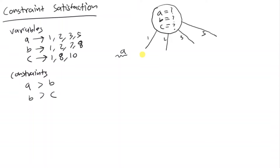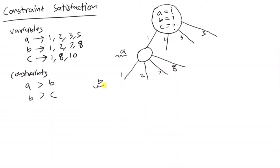Let's go with picking 1 for a. Once we've picked a value for a, we pick a value for b from 1, 2, 7, and 8. If we pick 1 for b, we check our constraint: a is not greater than b since both are 1, so this violates a constraint. We cannot pick 1 for b — dead end.